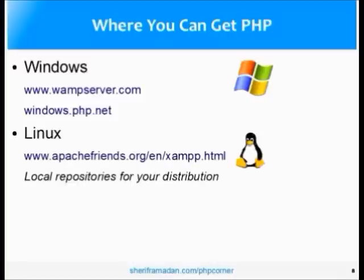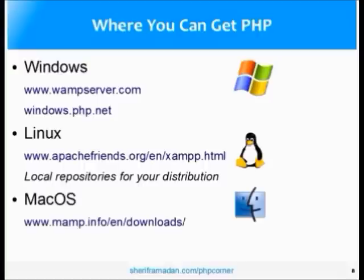On a Linux system, it's easier to compile it yourself or find the binaries from your distribution's local repository. You can also get the binaries and installer for any of these operating systems from apachefriends.org. The XAMPP package there has Apache, MySQL, PHP, and Perl binaries with an easy-to-set-up and easy-to-configure installer. On Mac, there's also the MAMP package available from mamp.info.